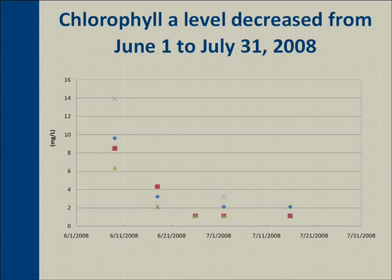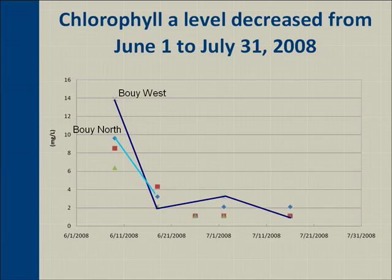The chlorophyll A level decreased from June 1st to July 31st in our monitoring. Looking at Bowie West, we can see it dropped dramatically and then stabilized. The same pattern appears with Bowie North and Bowie South. Here's what I've done. I've first created a better headline, which is something all slides need — it's the first step in the method in the book.